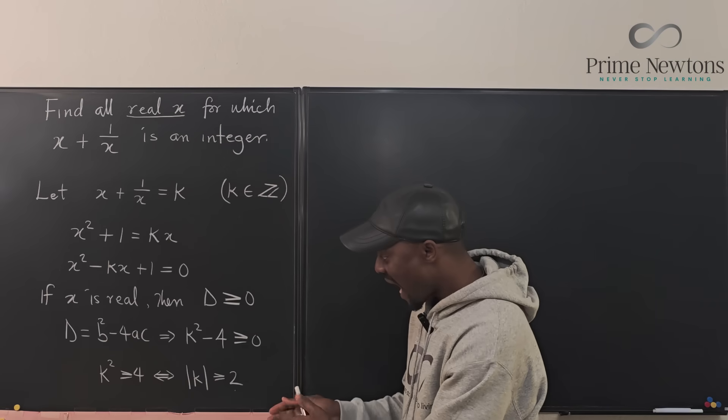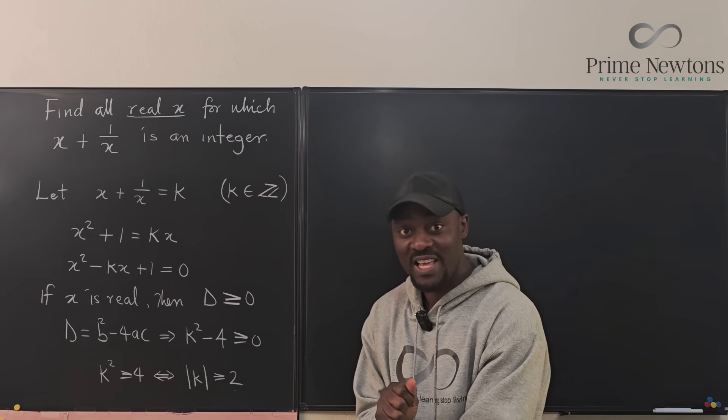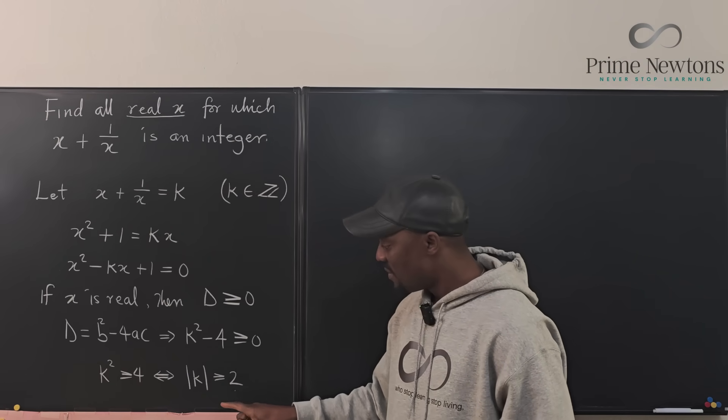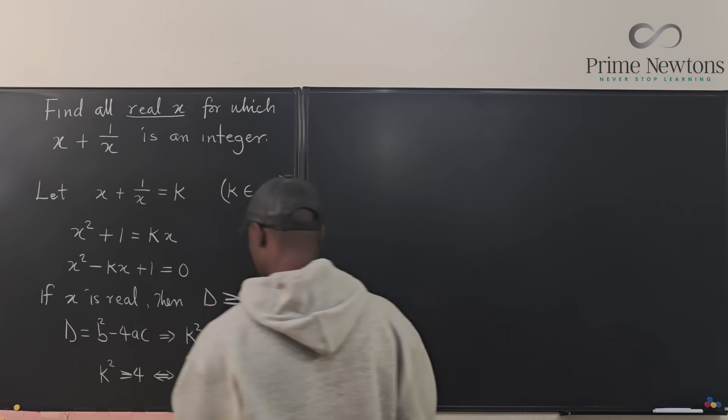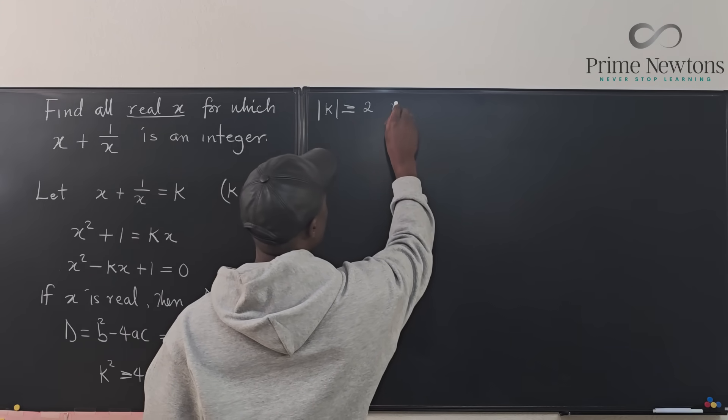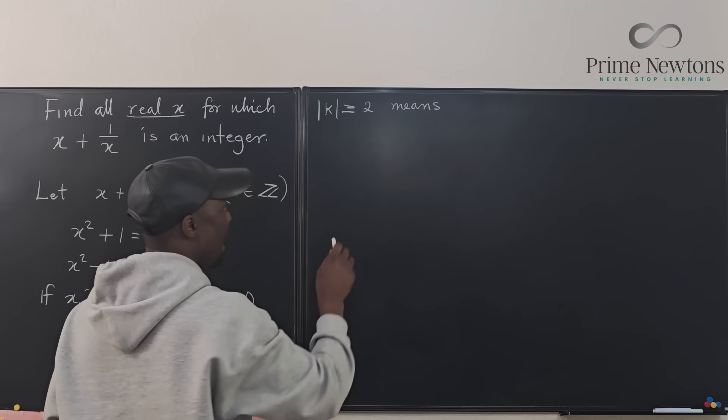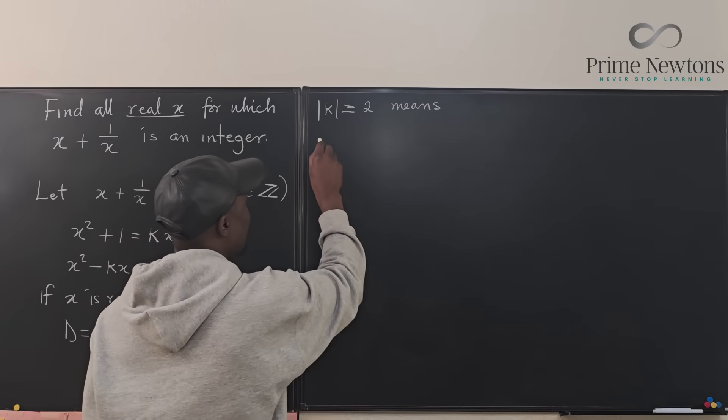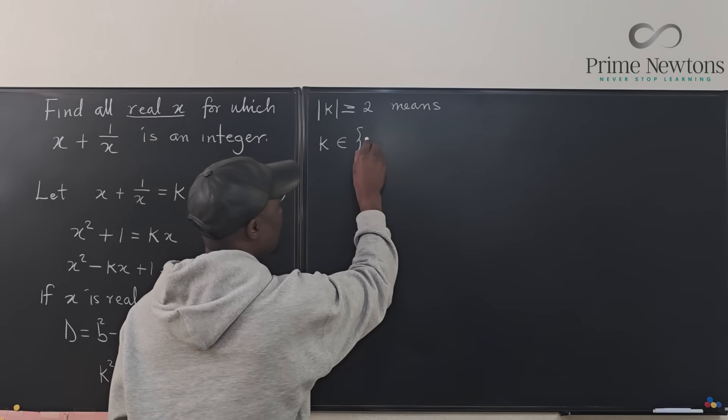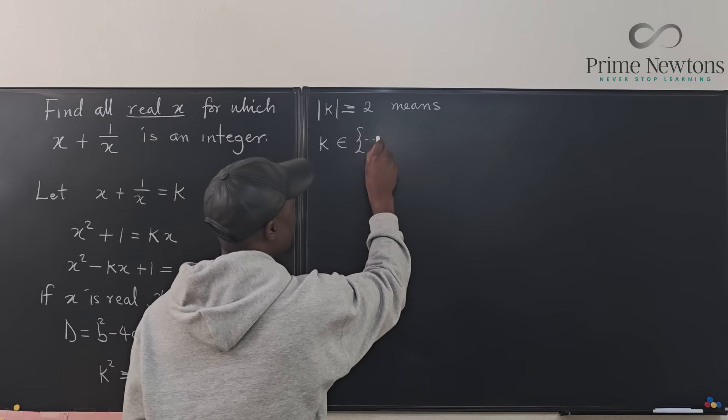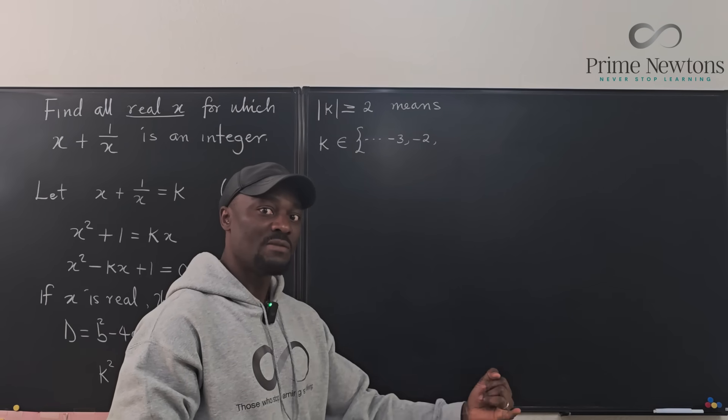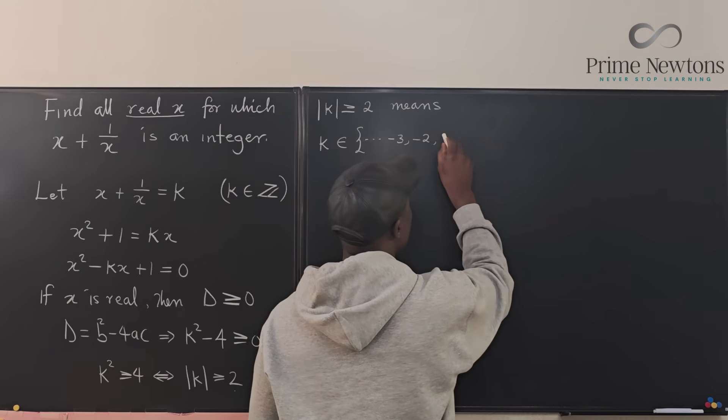So with this, we have a restriction. We're saying if you're going to put any k here, that k has got to be a number that is two steps from 0. So absolute value of k greater than or equal to 2 means that the values that satisfy k, that k must be in the set of values from negative 3, negative 2. You are going to skip negative 1, skip 0, skip 1, and then you go to 2, 3.